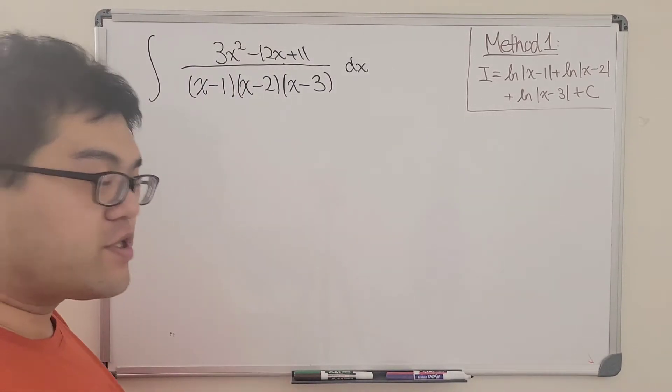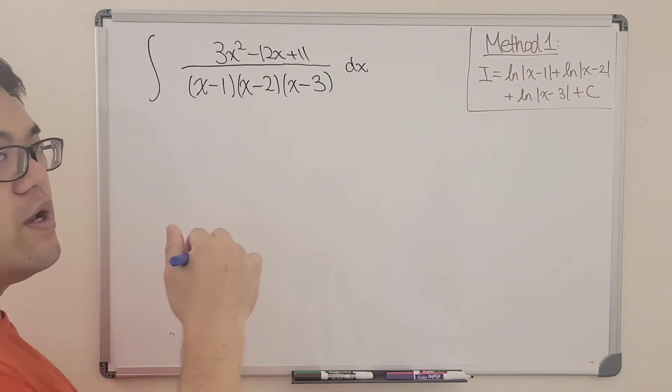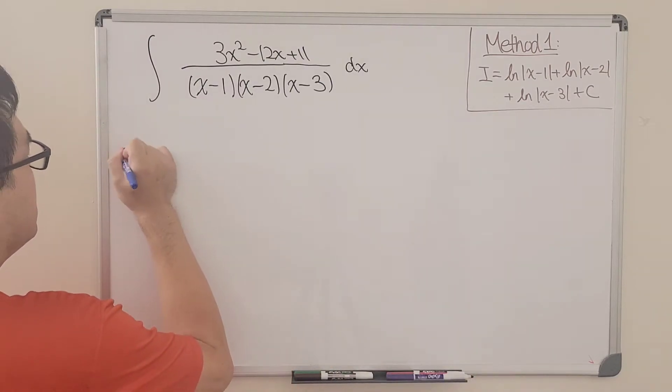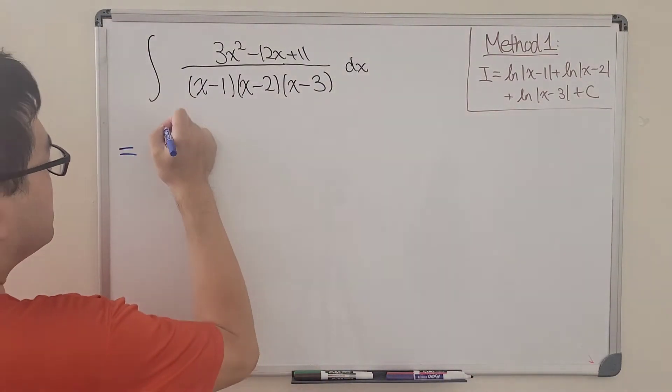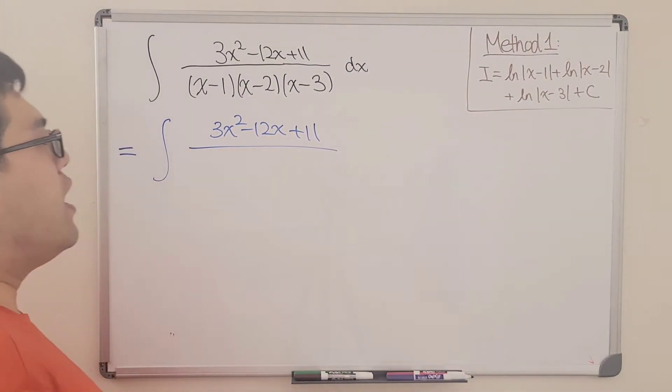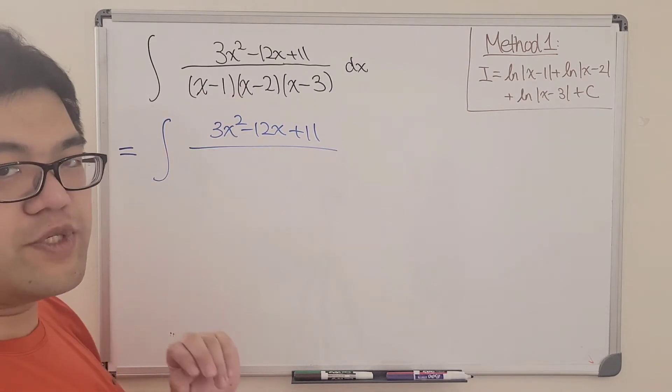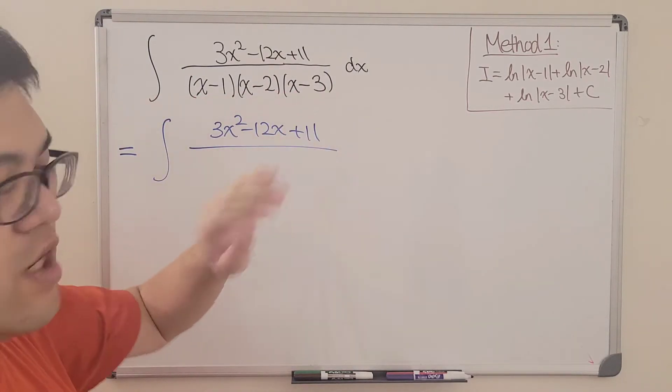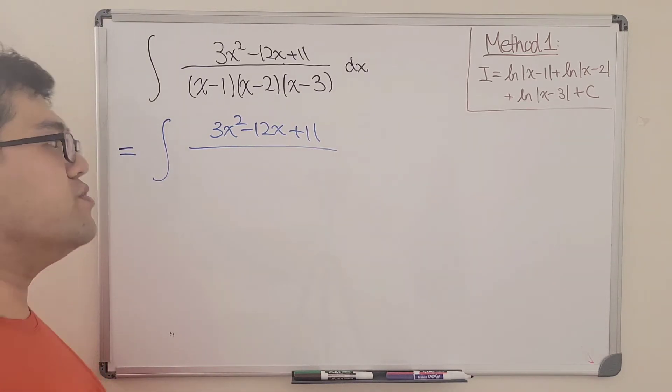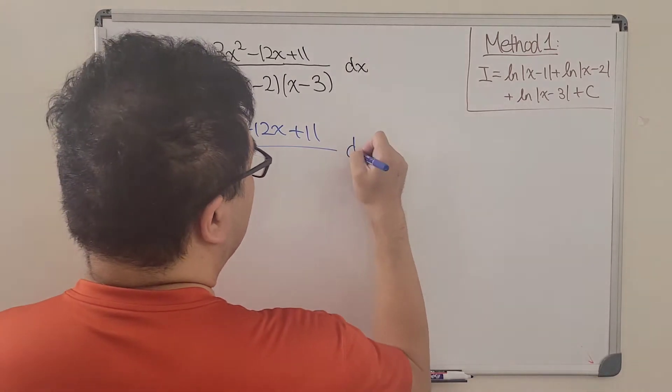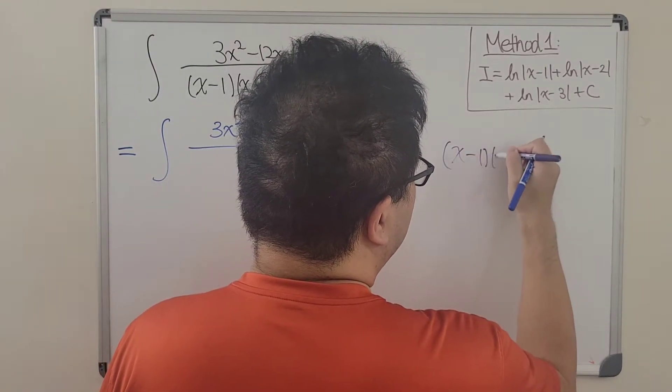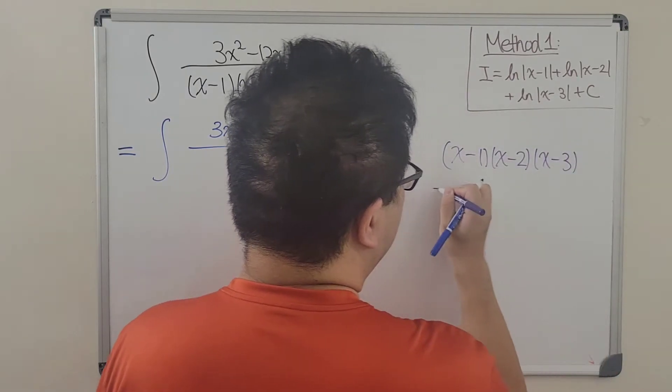Alright! So in the last board, we used the first method, which is partial fraction decomposition inside before we take the integral to find out the integral is equal to the following. So anyway, this time we are going to use a different method and see if we will be able to get the same result back. Okay? So here we go. For the second method, instead of doing with partial fractions, this time I'm going to multiply all the terms in the denominator before I see... This time I'm going to take the product of all the factors in the denominator to see what we can do.